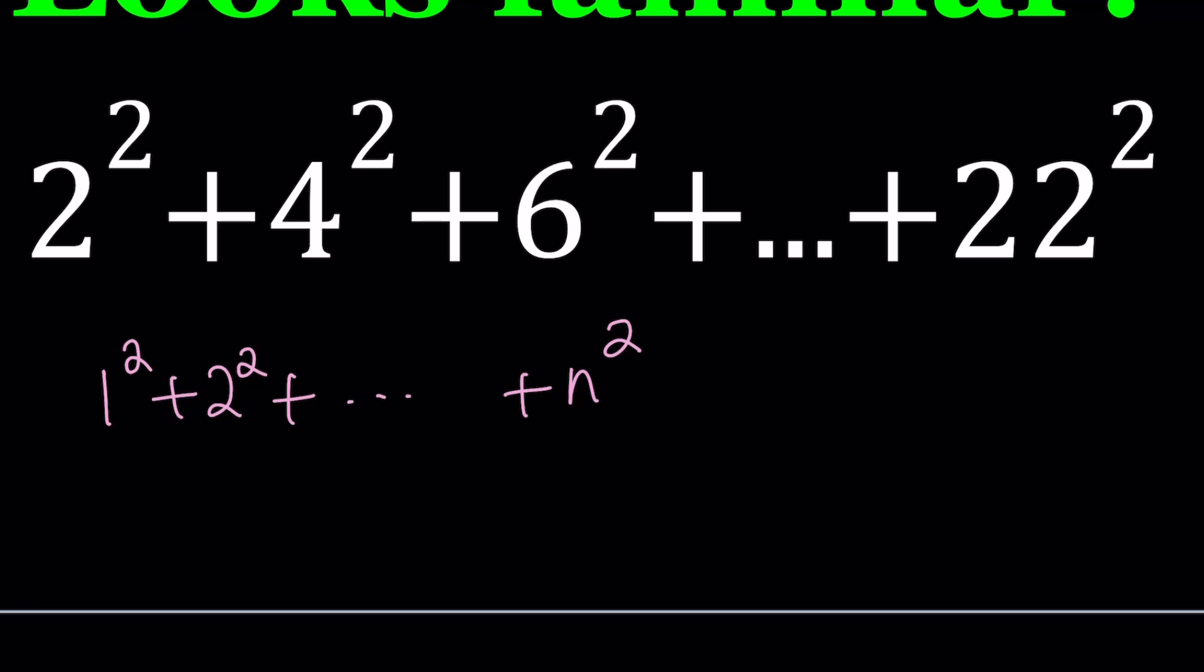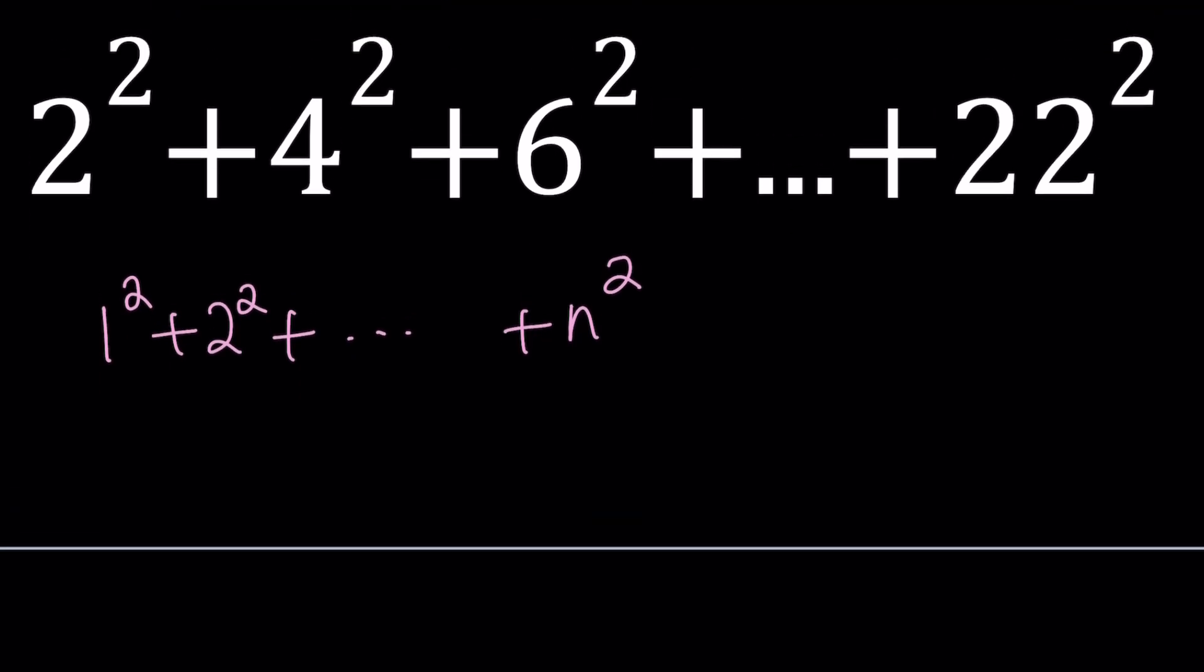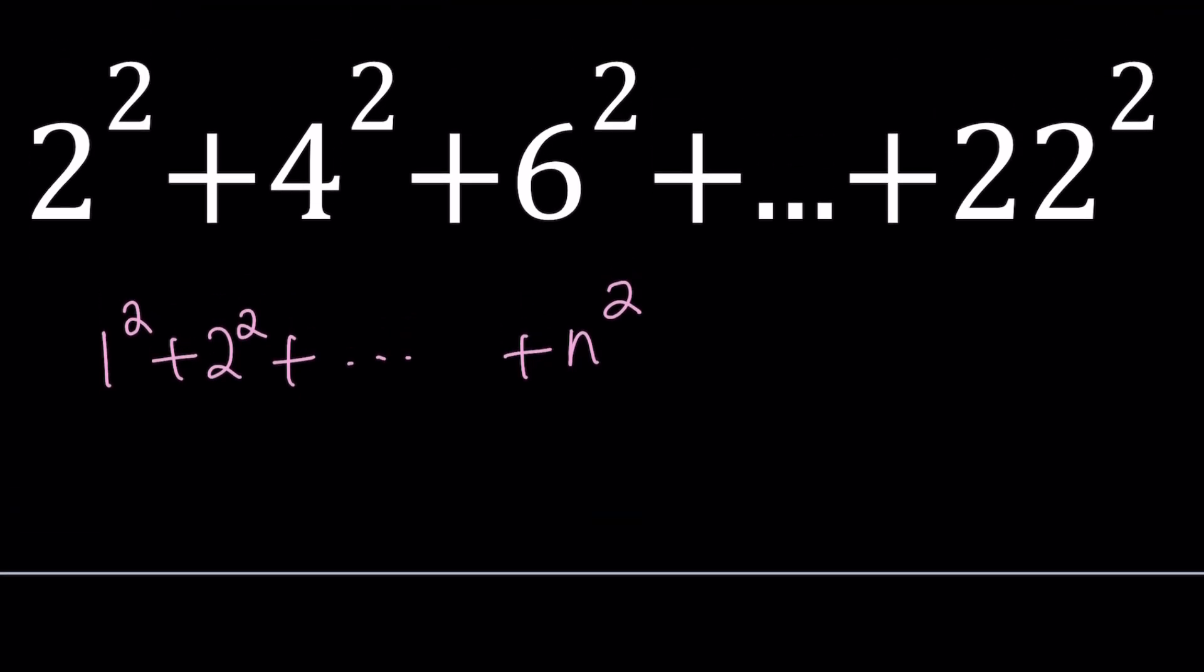In other words, I'm going to be looking for a formula to evaluate this sum, 1 squared through n squared, where n is a positive integer. Now, you can prove, if you are given a formula, you can definitely use mathematical induction and do a proof, but that's not our goal. We're going to come up with the formula, that's what I mean by derive.